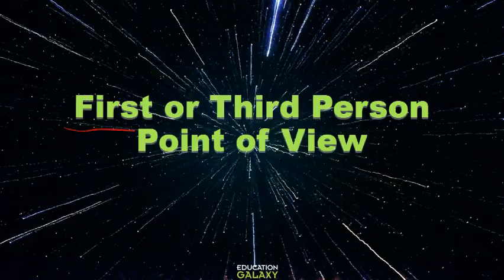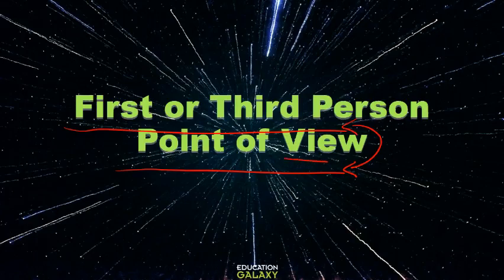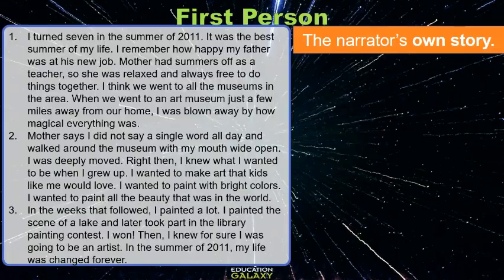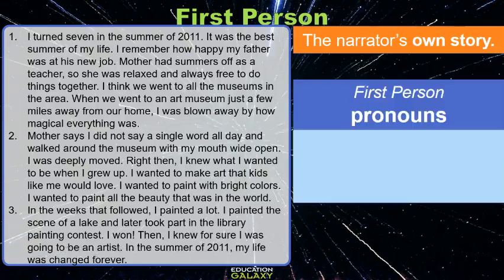Let's look at first or third person point of view. Point of view means from whose eyes the story is being told. When a story is told from a first person point of view, it tells the narrator's own story.